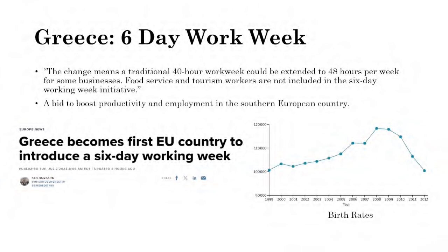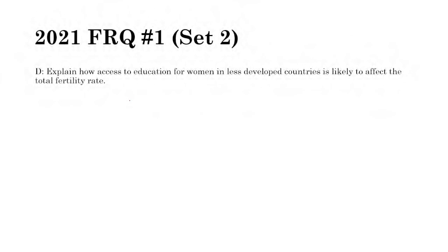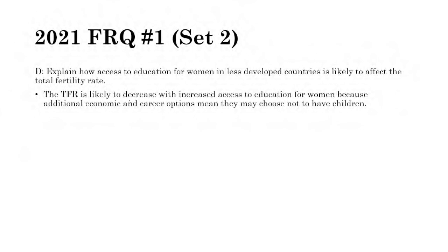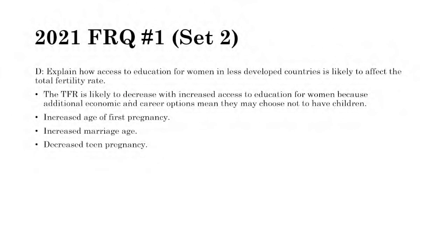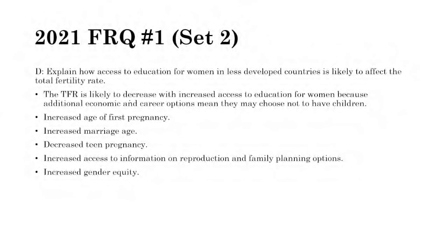Greece aims to boost productivity and employment so the economy does well and people have higher incomes to support kids — but raising children requires not just money, but also time and energy. A 2021 FRQ asks how access to education for women in less developed countries is likely to affect TFR. Education will decrease TFR because of increased economic and career opportunities, increased age at first pregnancy, decreased teen pregnancy, increased access to information on reproduction and family planning, and increased gender equity.